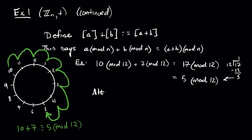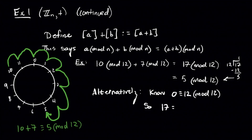Another way to look at the algebra we did is to use what's called the division algorithm, which says: find the biggest multiple of 12 that doesn't go over your number. That is equivalent to 0, and what you're left with is the remainder.